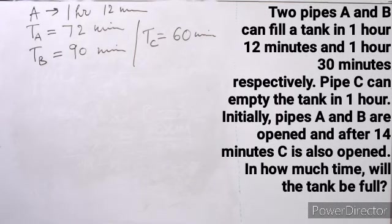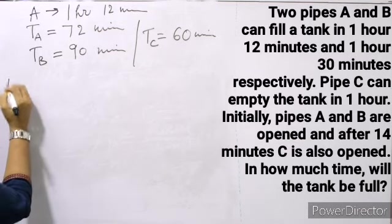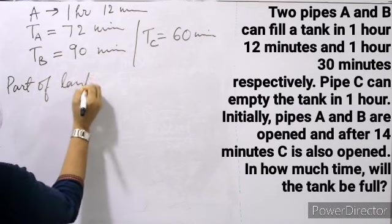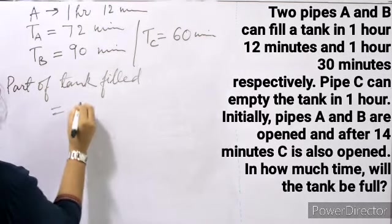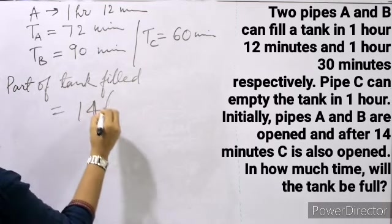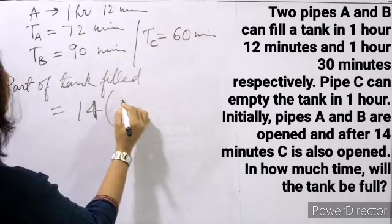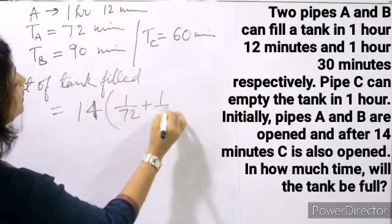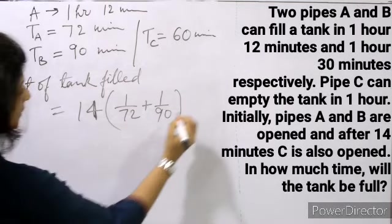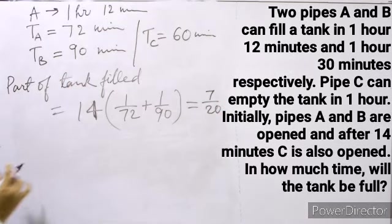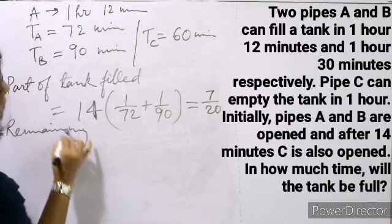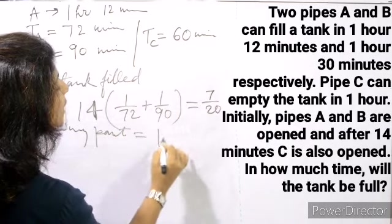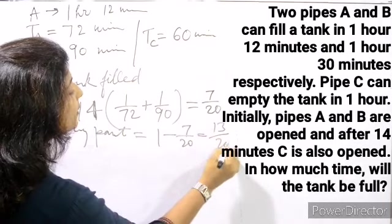In the first 14 minutes with only A and B open, the part filled is 14 × (1/72 + 1/90) = 7 upon 20. The remaining part is 1 minus 7 upon 20 = 13 upon 20. Then all three pipes are open. The net rate is 1 upon 72 plus 1 upon 90 minus 1 upon 60. This takes time T to fill the remaining 13 by 20 of the tank.